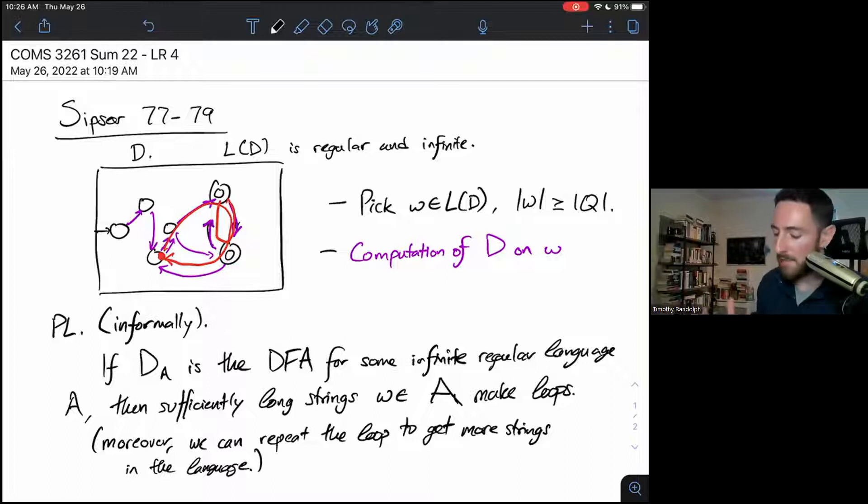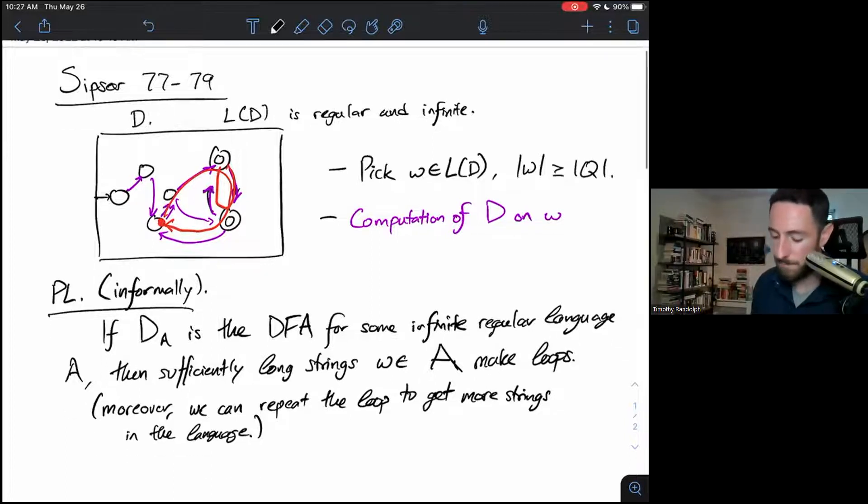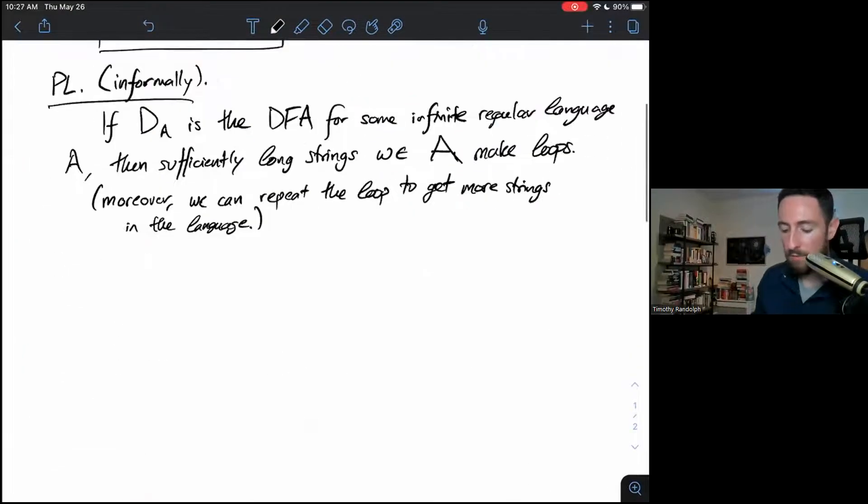So what this is, is an observation about regular languages. We're saying all infinite regular languages have this property. And the reason why the pumping lemma will be useful to us is now we'll be able to say all regular languages have this property. So if you don't have this property, you must not be a regular language.